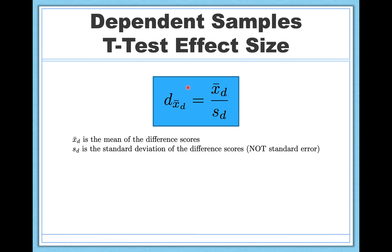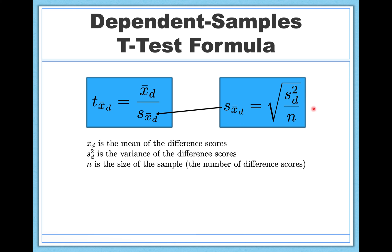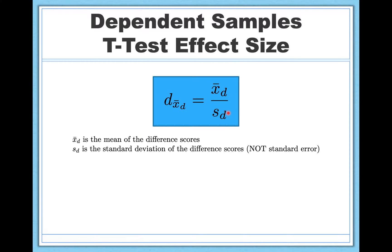Finally, for effect size, Cohen's d sub x-bar-d equals the mean of the difference scores divided by the standard deviation of the difference scores. After doing the hypothesis test, you already have everything you need: the mean of the difference scores, and since you calculated the variance, the standard deviation is just the square root. That's how you calculate the dependent samples t-test and its effect size.